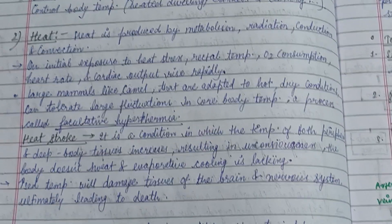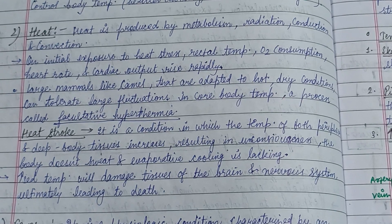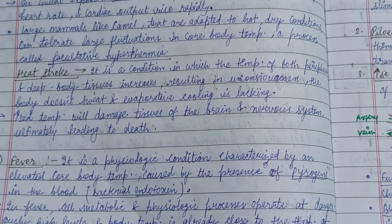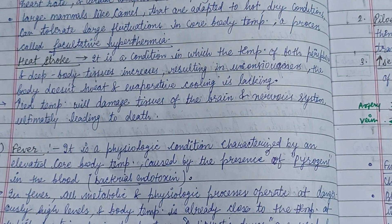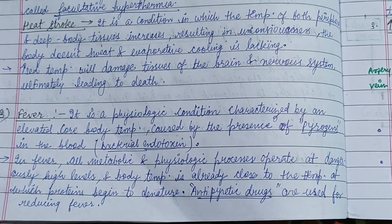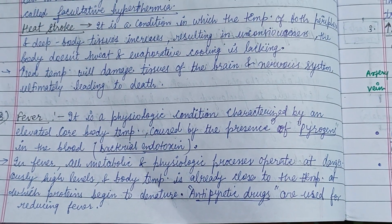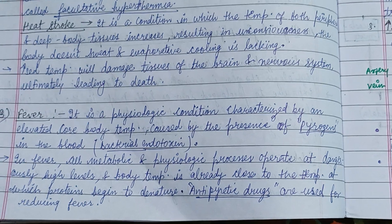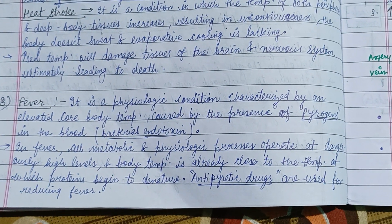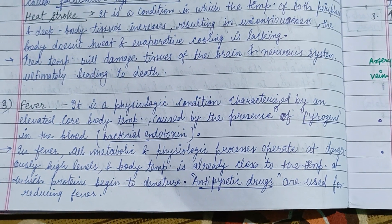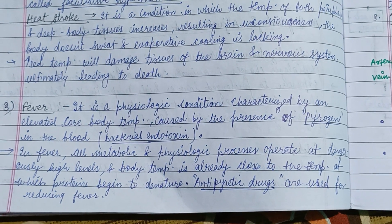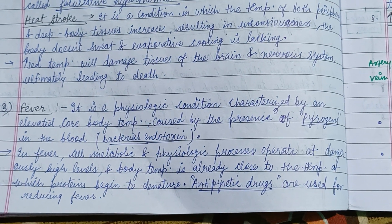Heat is produced by metabolism, radiation, conduction, and convection. Heat stroke is a condition in which the temperature of the peripheral and deep body tissues increases, resulting in unconsciousness; the body does not sweat and evaporative cooling is lacking. Fever is a physiologic condition characterized by elevated core body temperature caused by the presence of pyrogens in the blood.